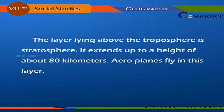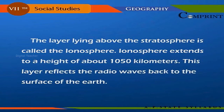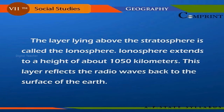The layer lying above the troposphere is the stratosphere. It extends up to a height of about 80 kilometers. Aeroplanes fly in this layer. The layer above the stratosphere is called the ionosphere. The ionosphere extends to a height of about 1050 kilometers. This layer reflects radio waves back to the surface of the earth.